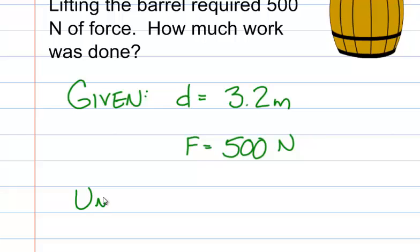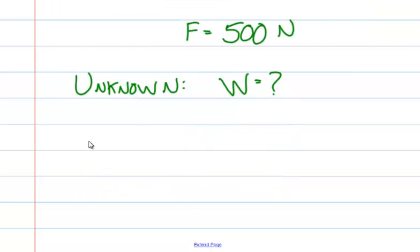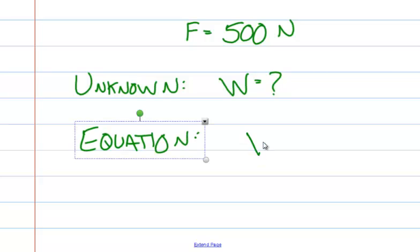The unknown in this case is how much work was done. We've done given and unknown. Now it's time to write the equation. The equation for work is: work is equal to force times distance.